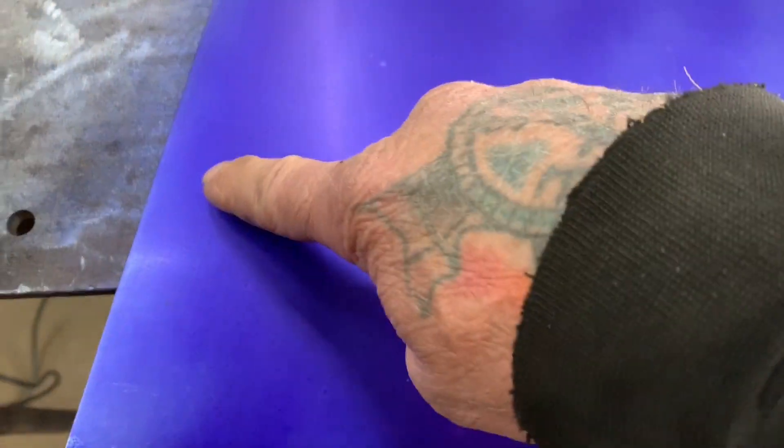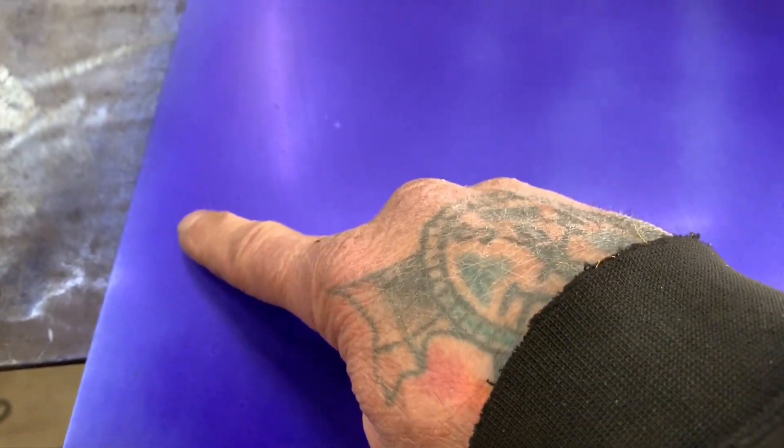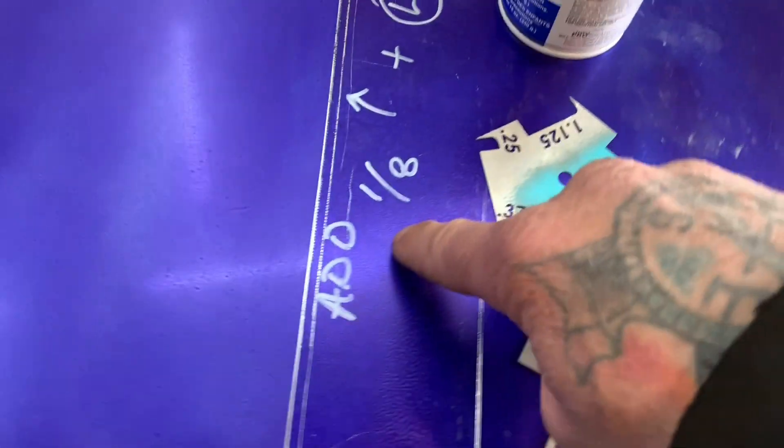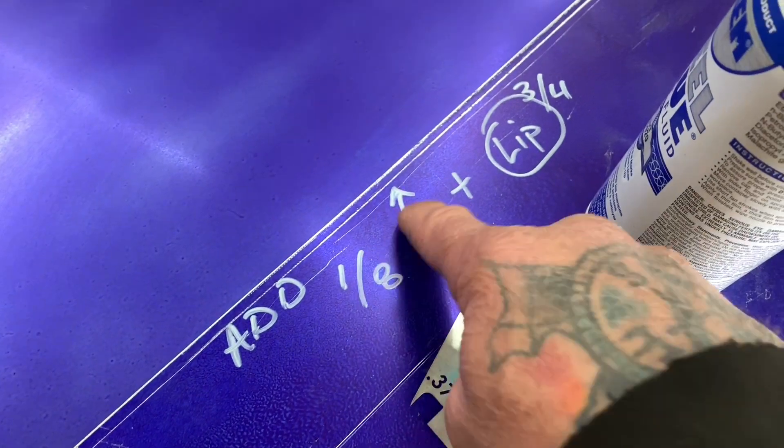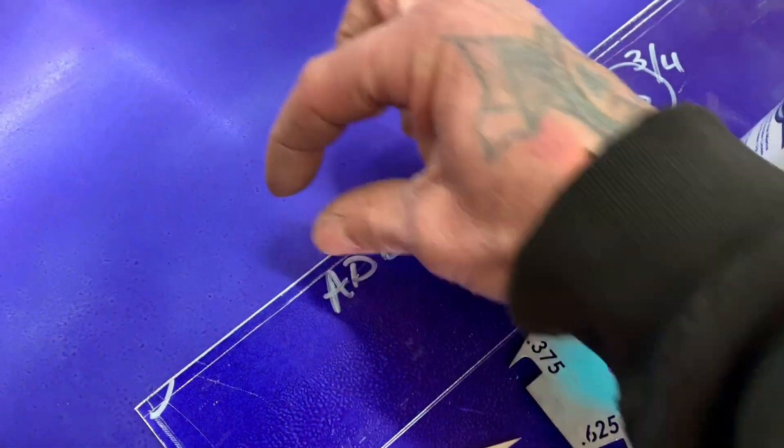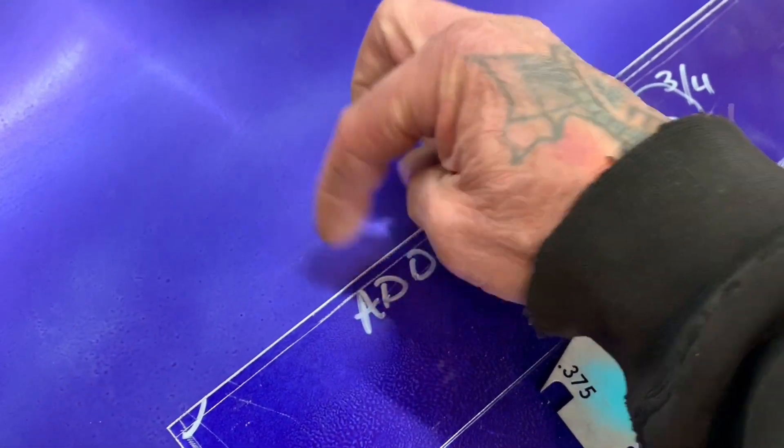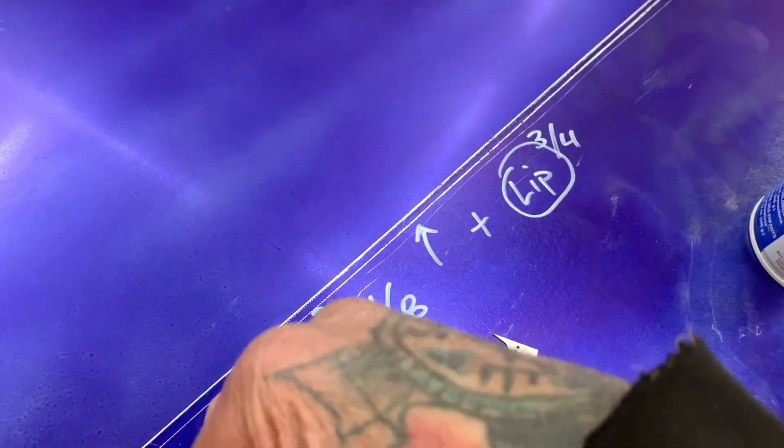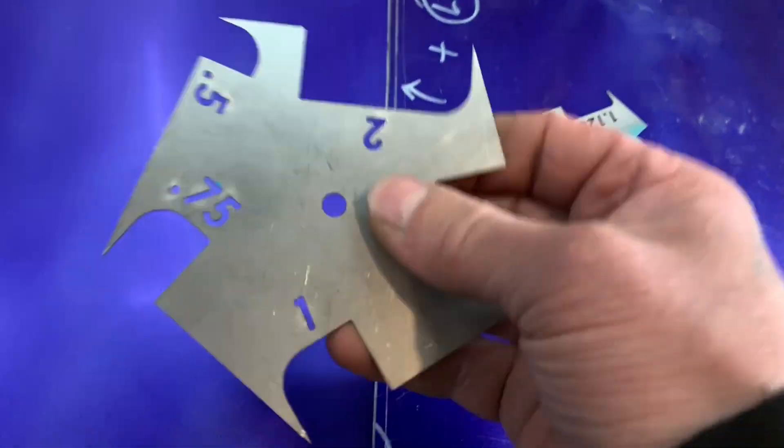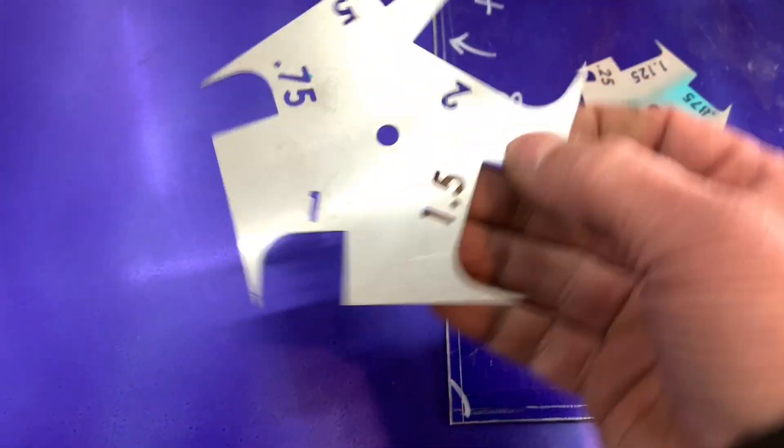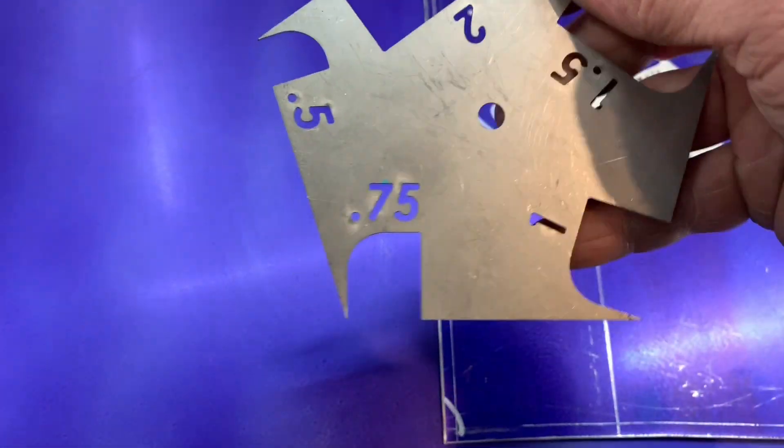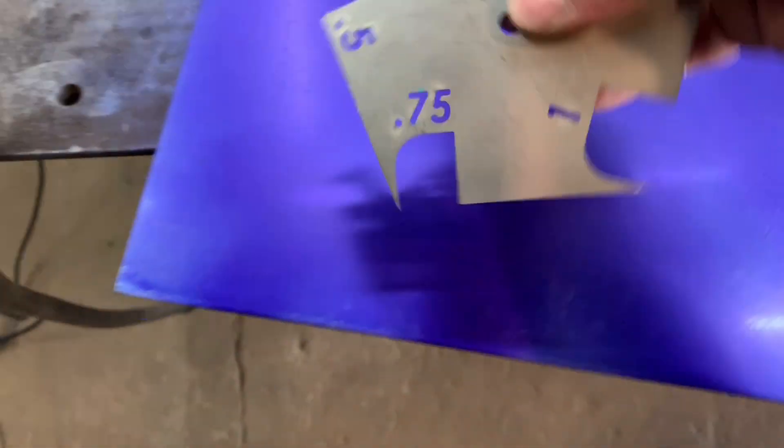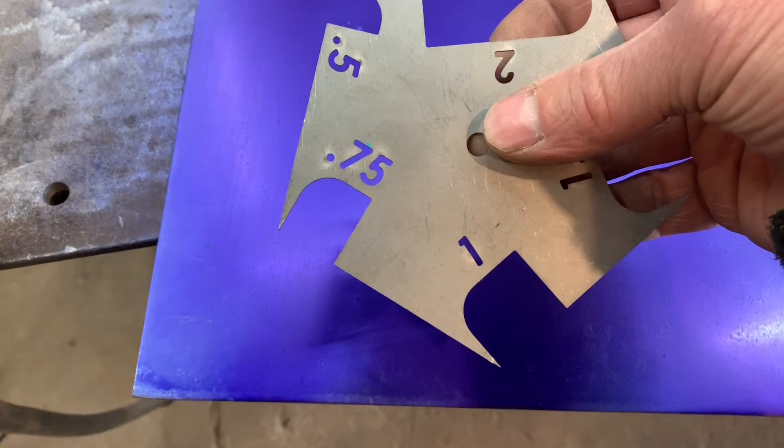So I need a three quarter inch lip right here. And then you can see I wrote on here, add an eighth inch to this panel here. And then where the bend is going to be, I want it to be three quarters inch on the lip. That's going to get folded under. And so you got three quarters right here. You got one and a half, two inch, one inch, three quarters, but it's a half inch.